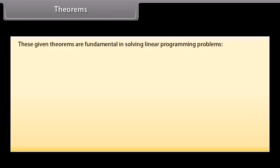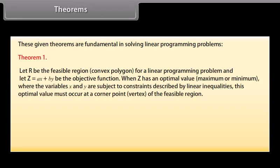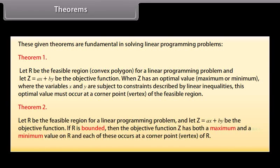Theorems fundamental in solving linear programming problems. Theorem 1: let R be the feasible region (convex polygon) for a linear programming problem, and let Z = AX + BY be the objective function. When Z has an optimal value (maximum or minimum), where X and Y are subject to constraints described by linear inequalities, this optimal value must occur at a corner point (vertex) of the feasible region. Theorem 2: let R be the feasible region and Z = AX + BY be the objective function. If R is bounded, then Z has both a maximum and a minimum value on R, and each occurs at a corner point (vertex) of R.